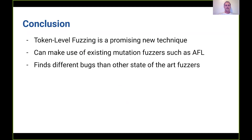In conclusion, token-level fuzzing is a promising new technique. It can make use of existing mutation-based fuzzers such as AFL and libfuzzer, and it finds different bugs compared to other state-of-the-art fuzzers such as grammar-based fuzzers. It runs at a completely different level than either grammar-based fuzzing or byte-based fuzzing, and I think it can be applied to many other situations and other interpreters beyond just JavaScript engines.